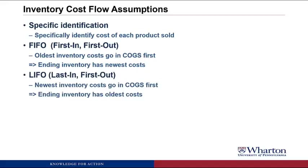The opposite way to do this would be LIFO, or Last In, First Out. Here, the newest inventory costs go into Cost of Goods Sold first. So the cost of the most recent purchases are the first costs that go out into Cost of Goods Sold, and what's left in ending inventory are the oldest costs — costs that could have been incurred a long, long time ago, because every period we take out the newest costs, leaving all the oldest costs behind.